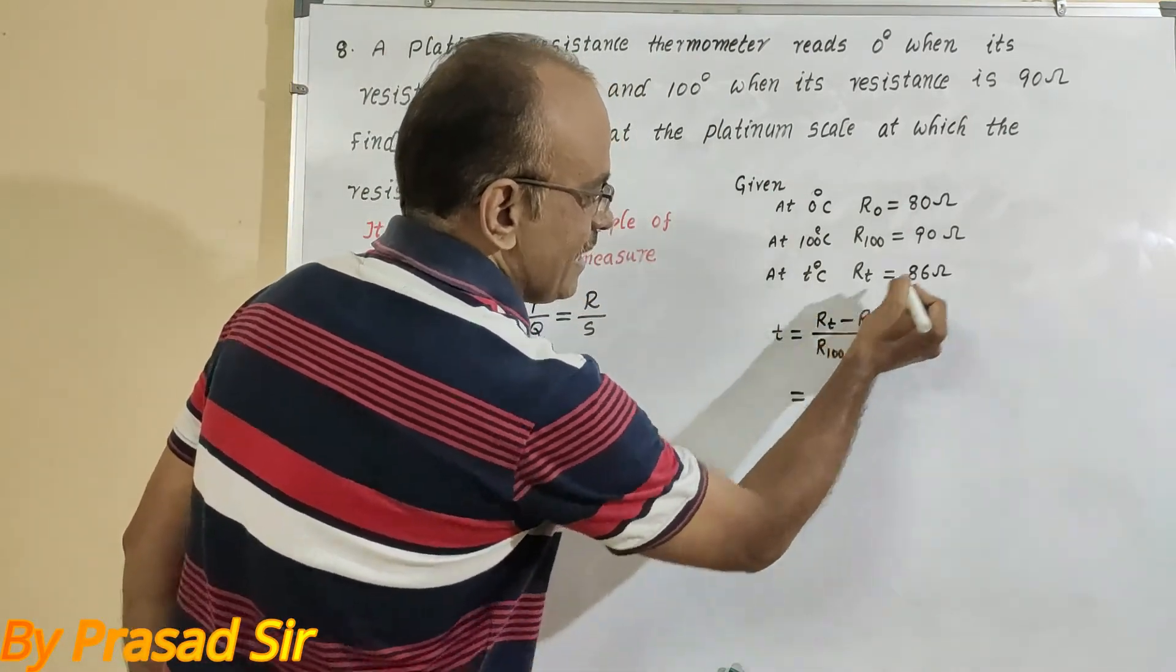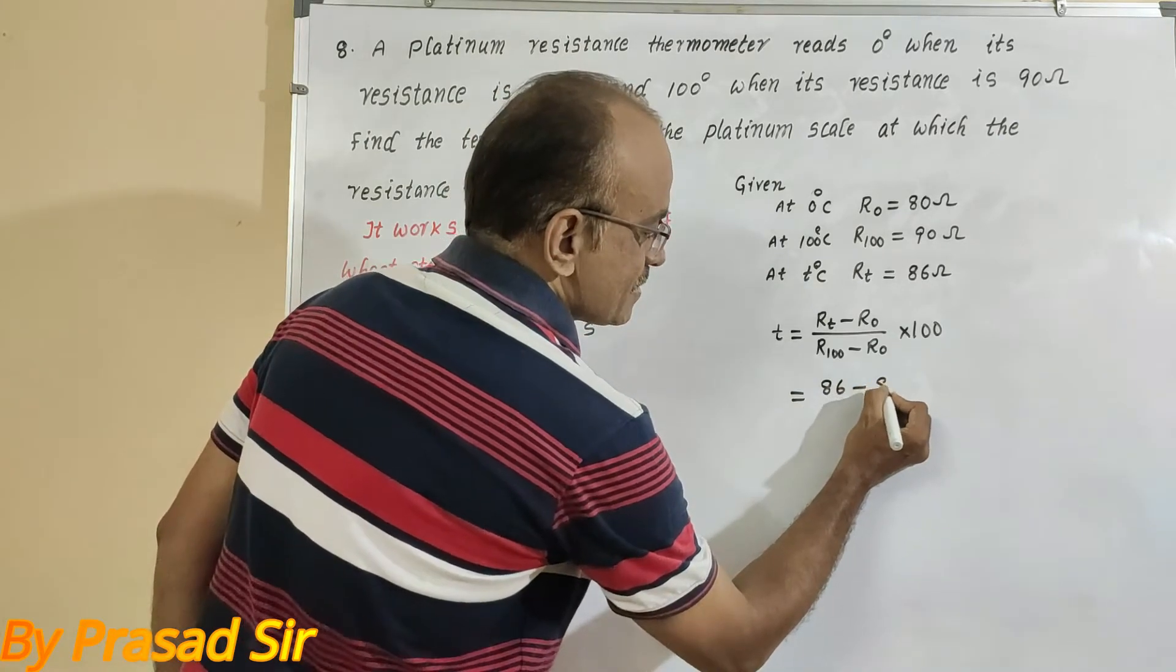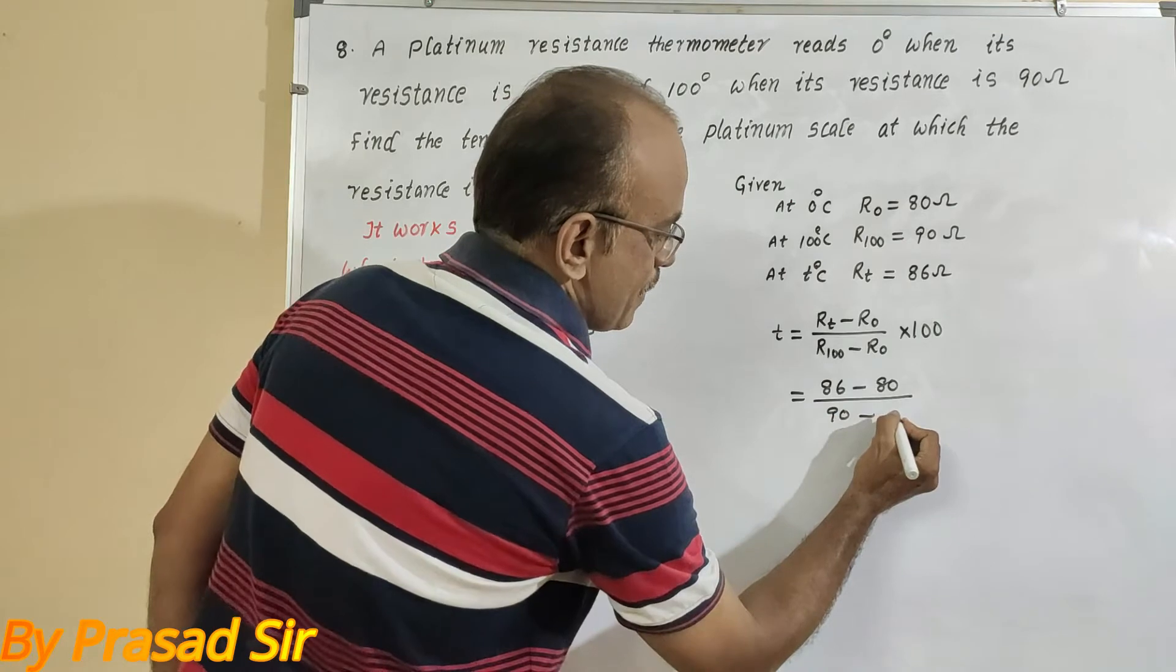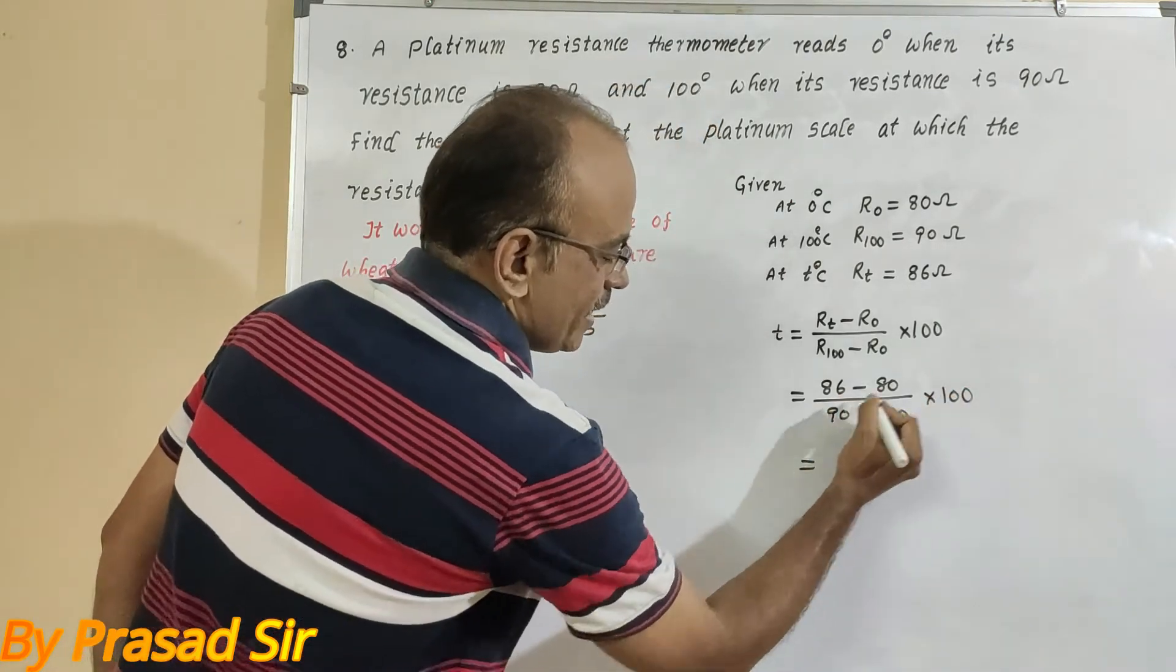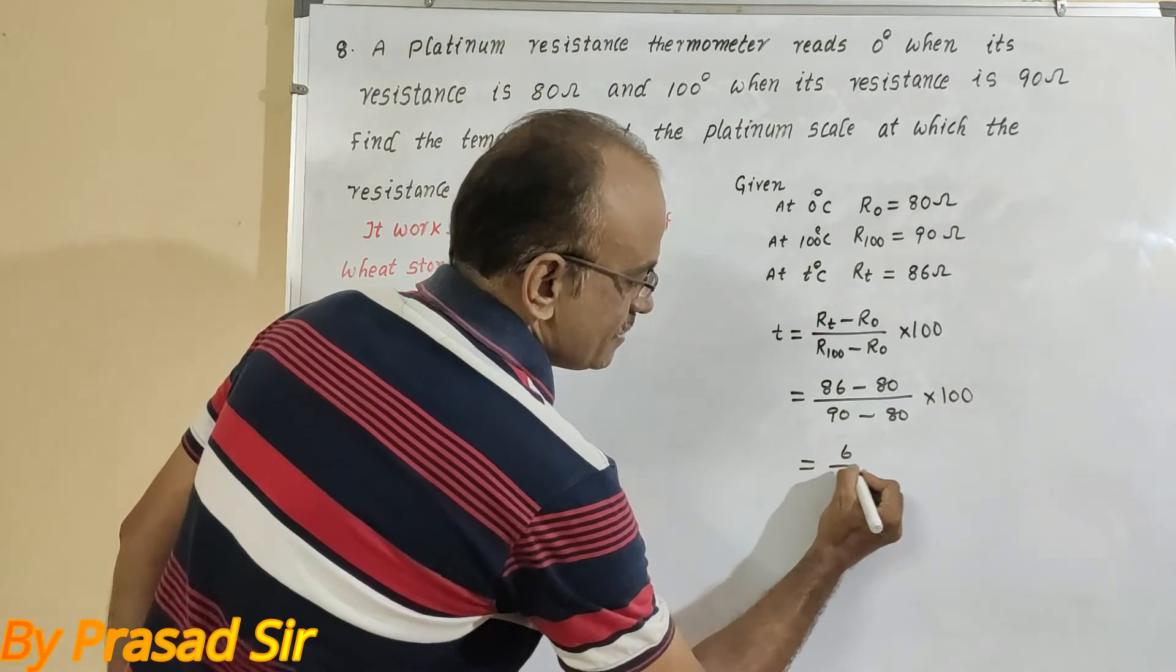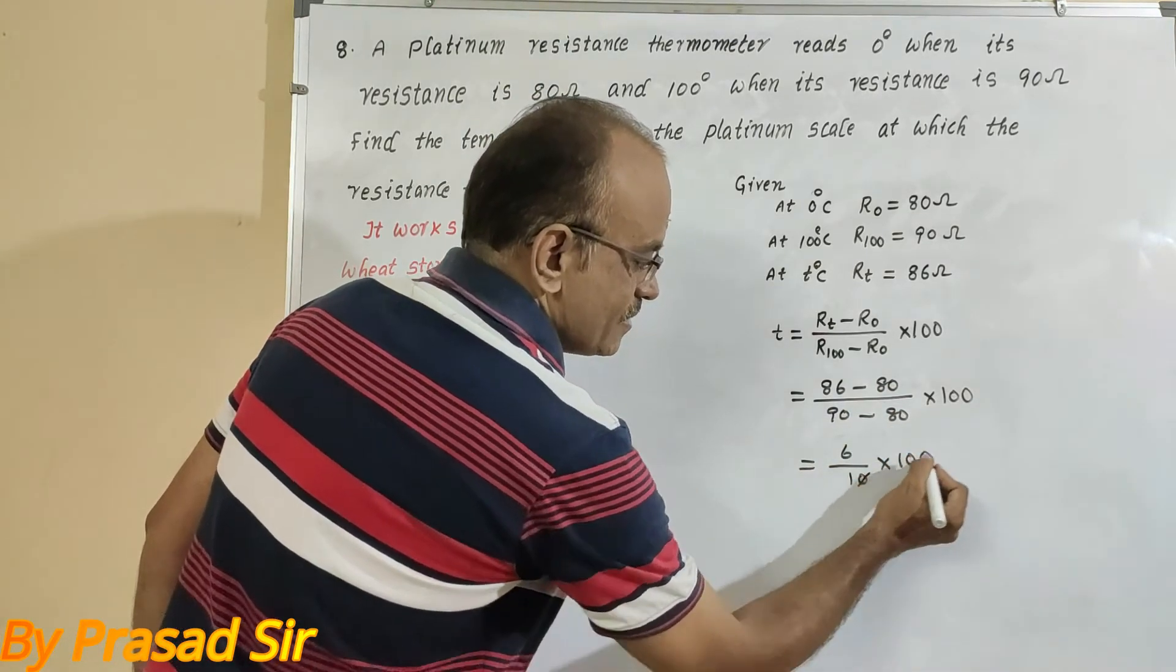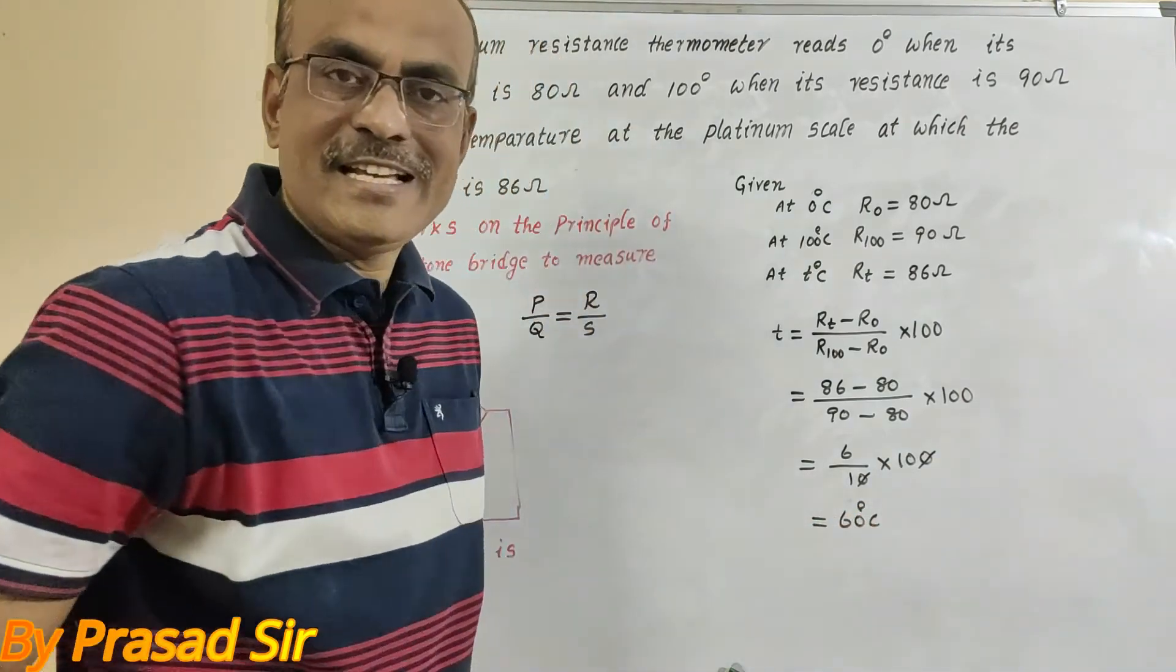Here, resistance at T, that is 86 minus 80, divided by 90 minus 80, into 100. So here, 6 divided by 10 into 100. Zero zero cancel. What is the answer? 60 degrees centigrade.